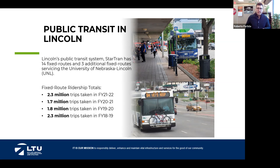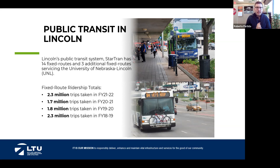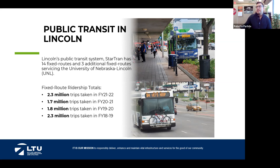From the public transit perspective, we have StarTran with 14 fixed routes and three additional routes specifically serving the University of Nebraska–Lincoln. Last fiscal year, we had a little over 2 million riders — seeing an uptick back after the pandemic. StarTran's overall mission is to provide safe, convenient, reliable, and accessible transit service for all community members and visitors to the city of Lincoln.